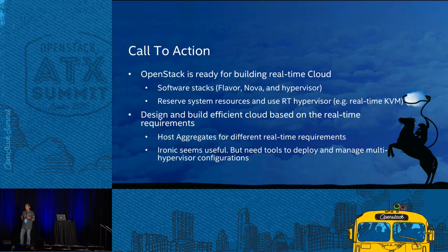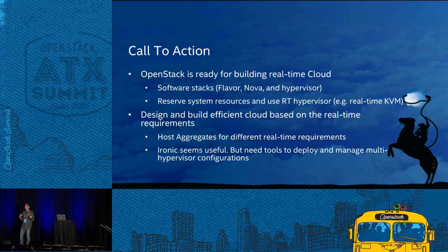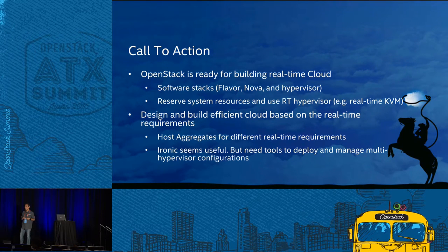From our experience, start with hyperthreading disabled — that's safer. You can try enabling HT to see how it changes things, but with HT you get more throughput at the potential cost of latency. For example, if OS software has a loop over processors, doubling the processor count causes more latency. It really depends on your application workload — enabling HT brings more risk.